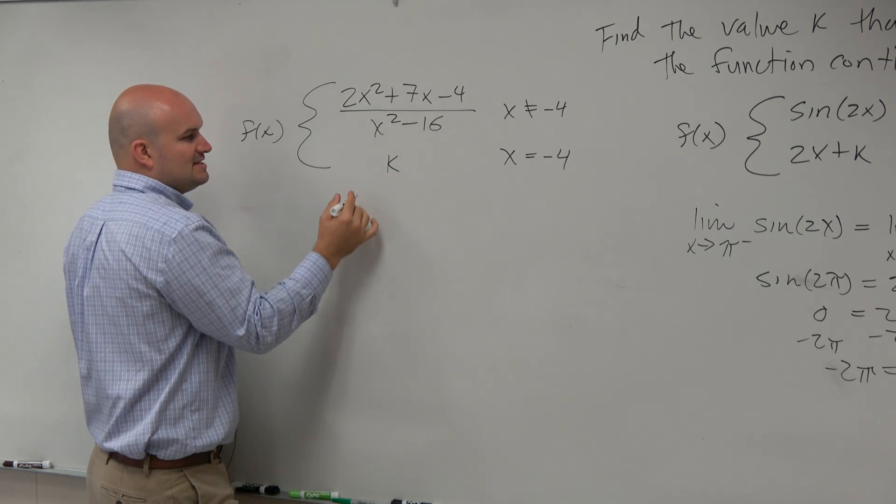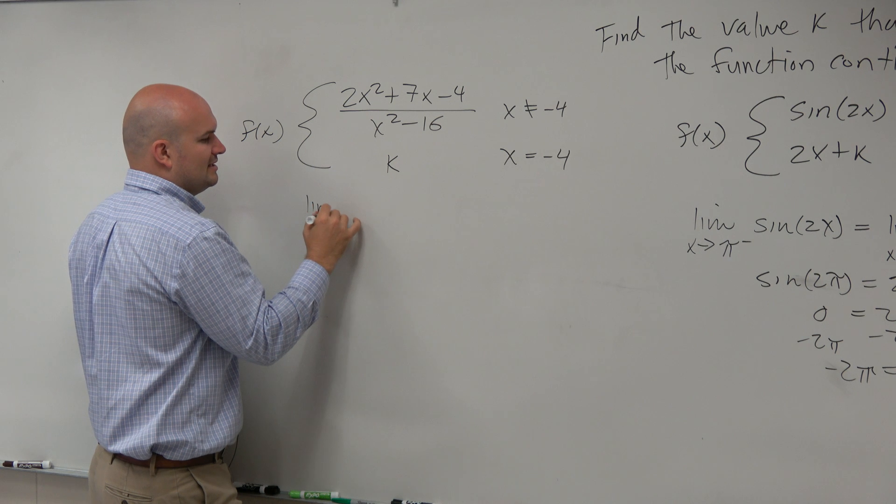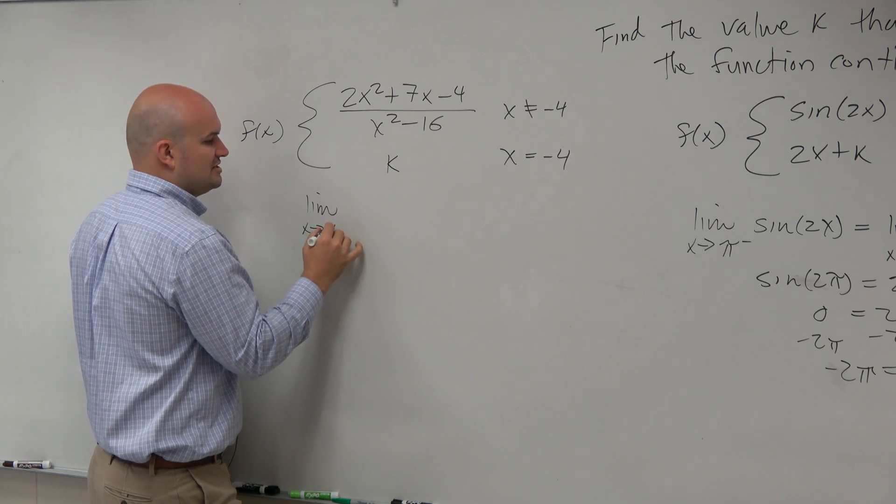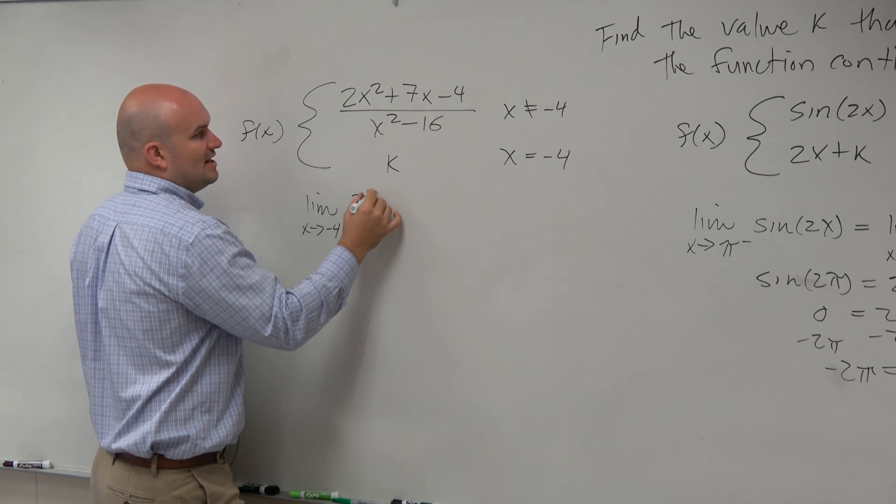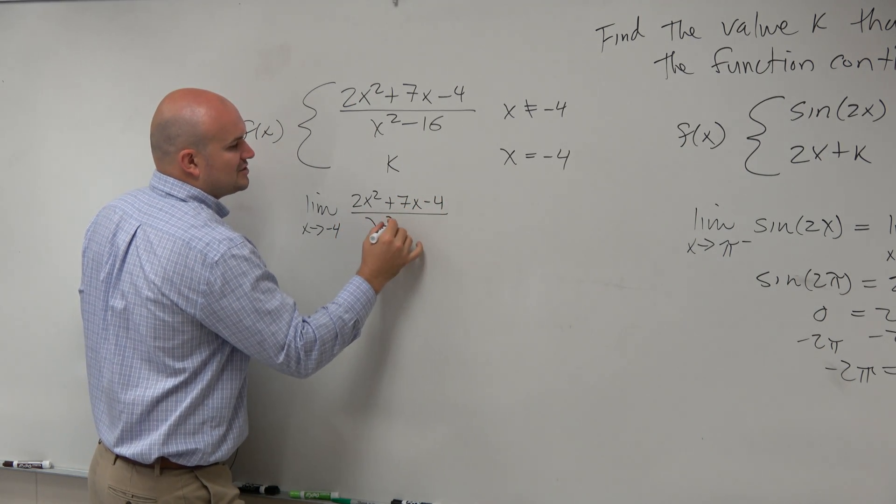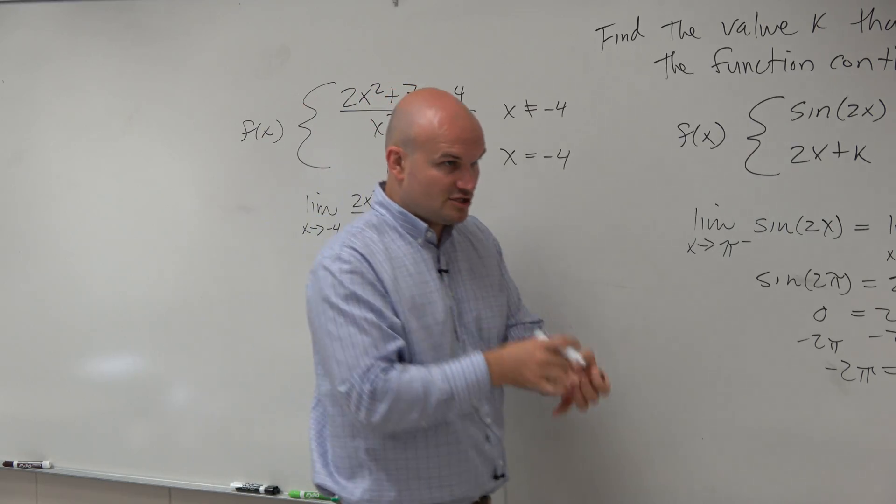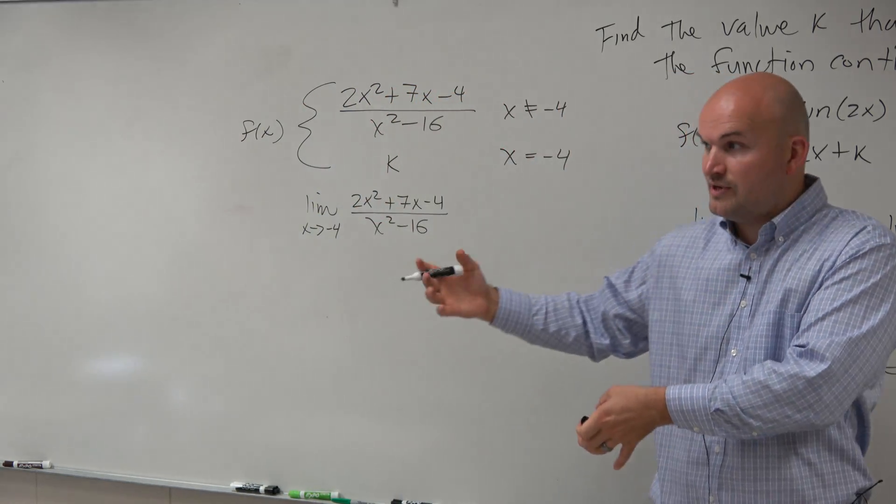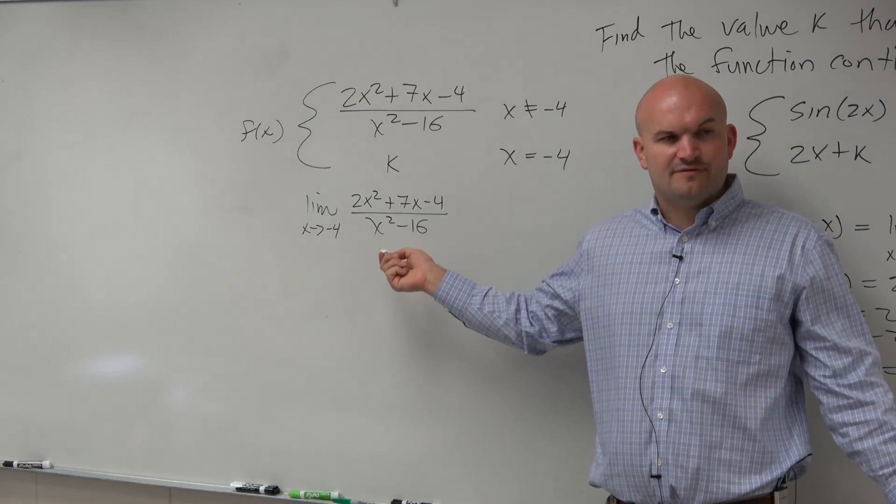So to do that, we basically need to evaluate the limit as x approaches negative 4 of 2x squared plus 7x minus 4 all over x squared minus 16. Now automatically, whenever I see a squared term subtracting another squared term, I know that I can factor that by difference of two squares.